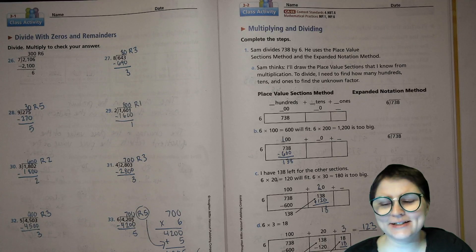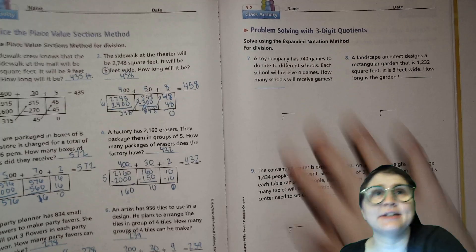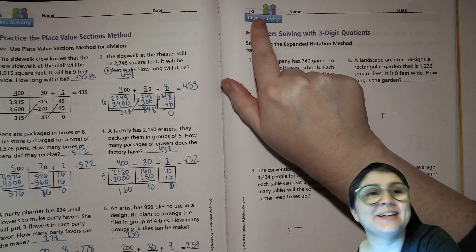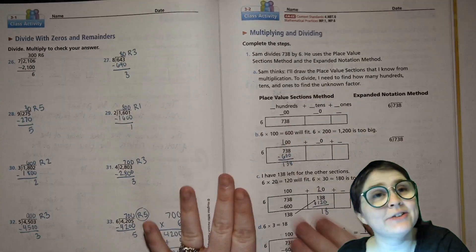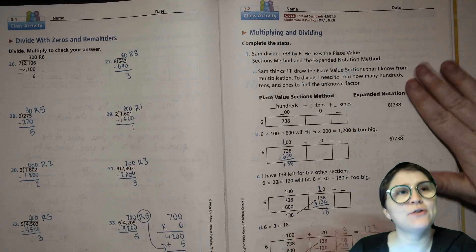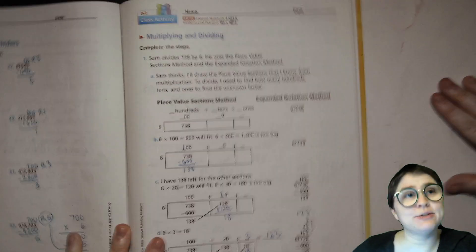Hello, fourth grade friends. Today we are doing the second part of our lesson, Unit 3, Lesson 2. In our first part, we talked about mostly the place value sections method, but today we're going to focus more on this expanded notation method.